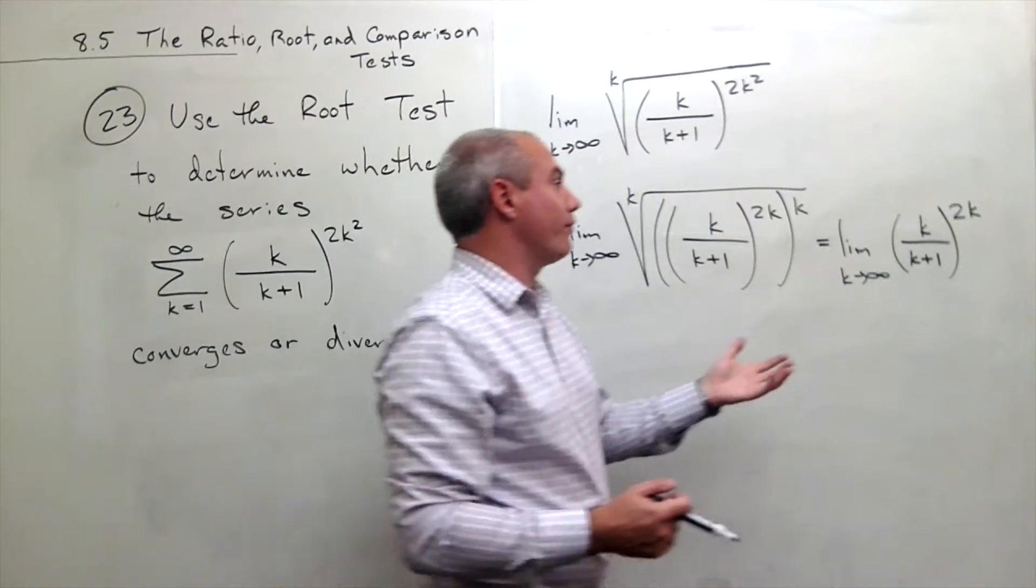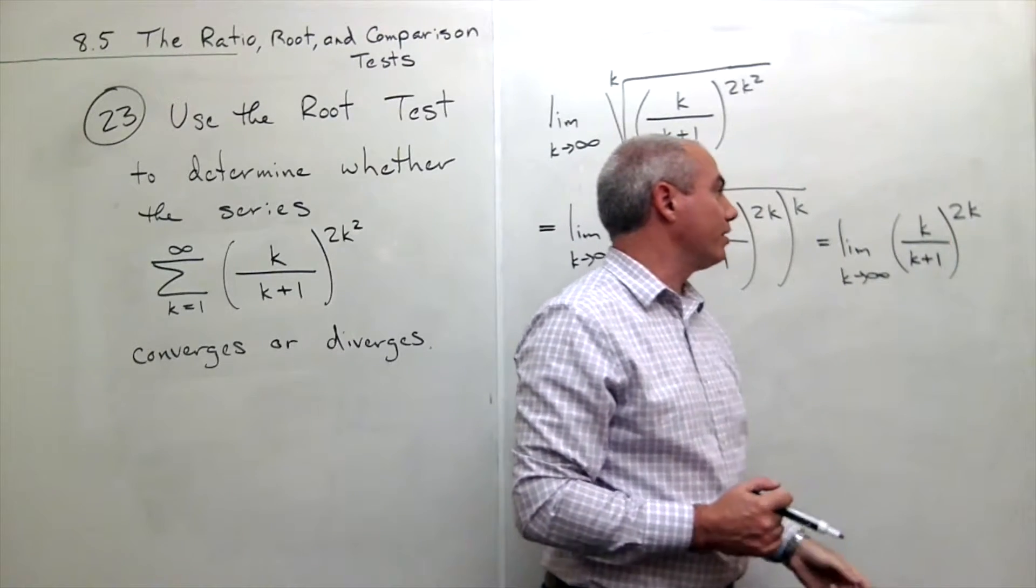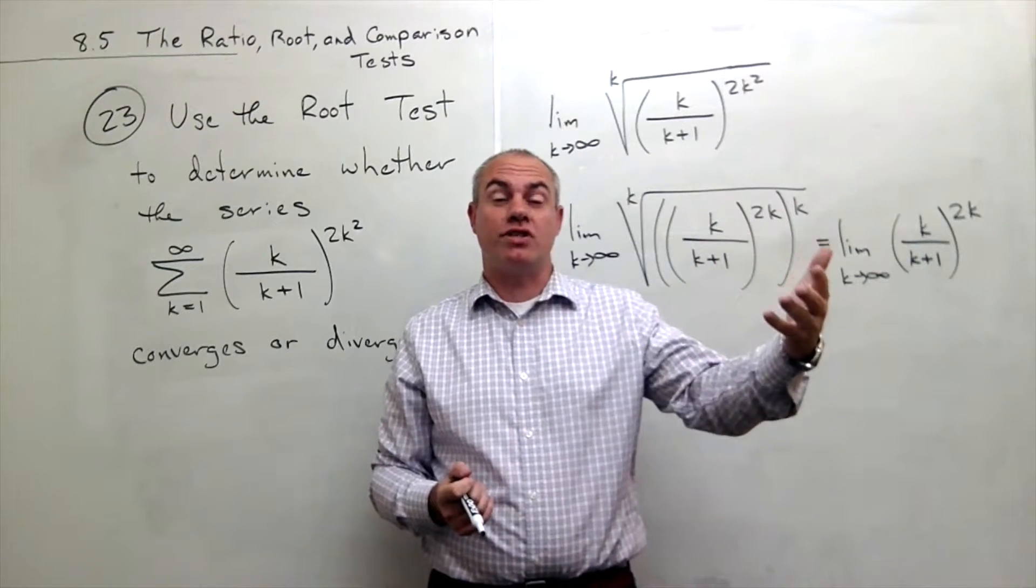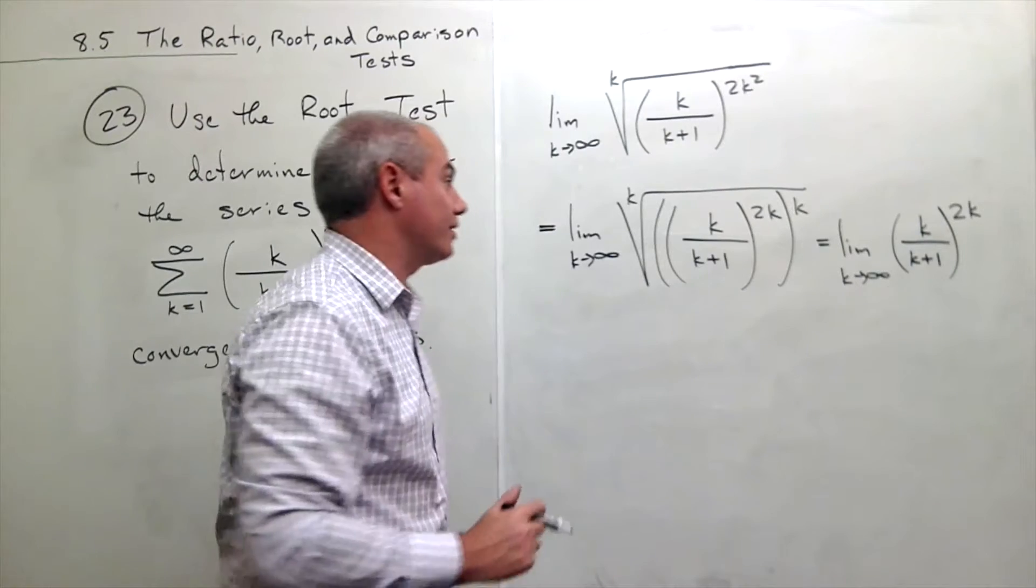If I had k plus 1 over k, then I could kind of simplify this thing down a little bit. Well, you can have a k plus 1 over k as long as you just flip that down to the bottom of the fraction. Let me show you exactly what I mean.